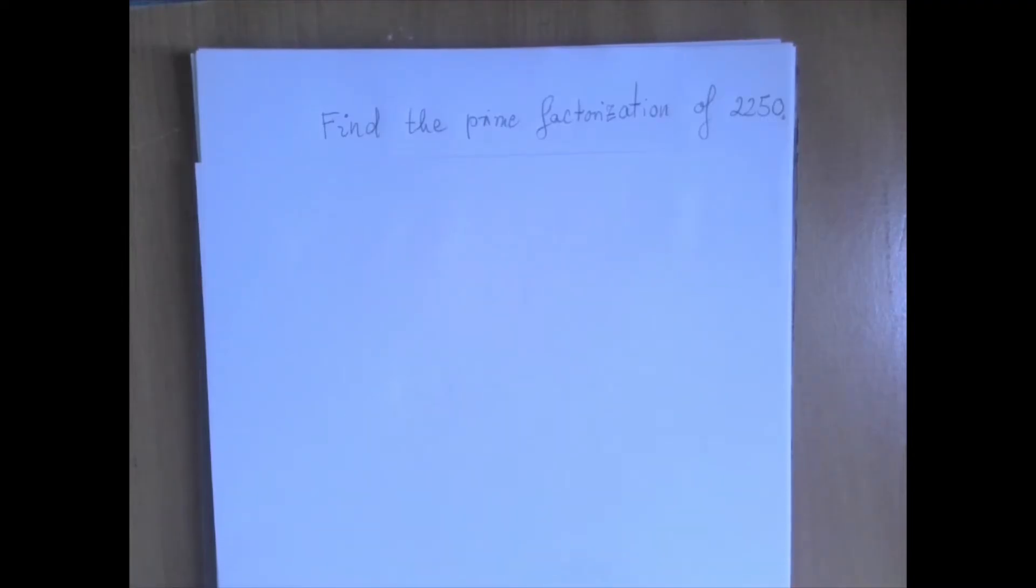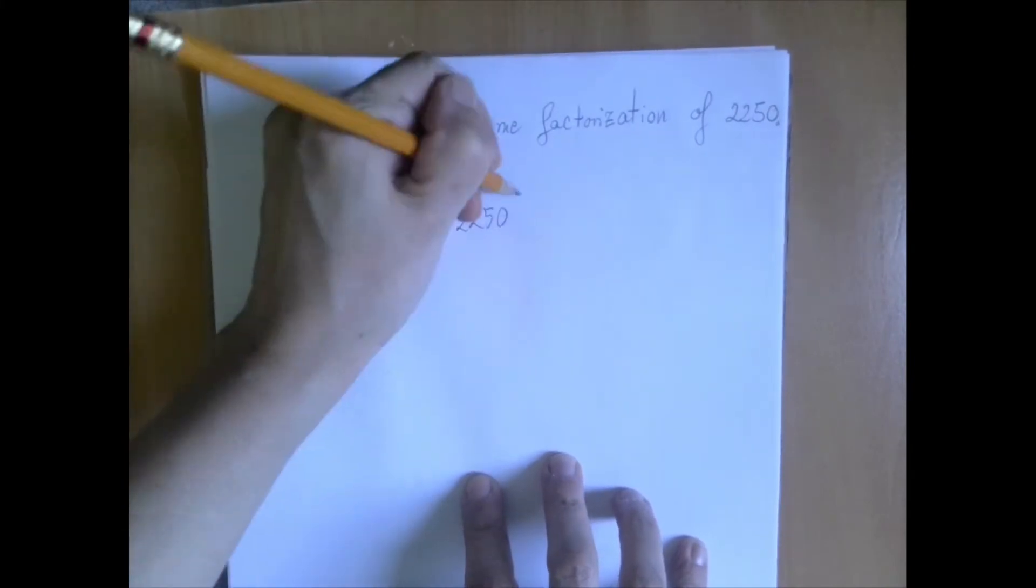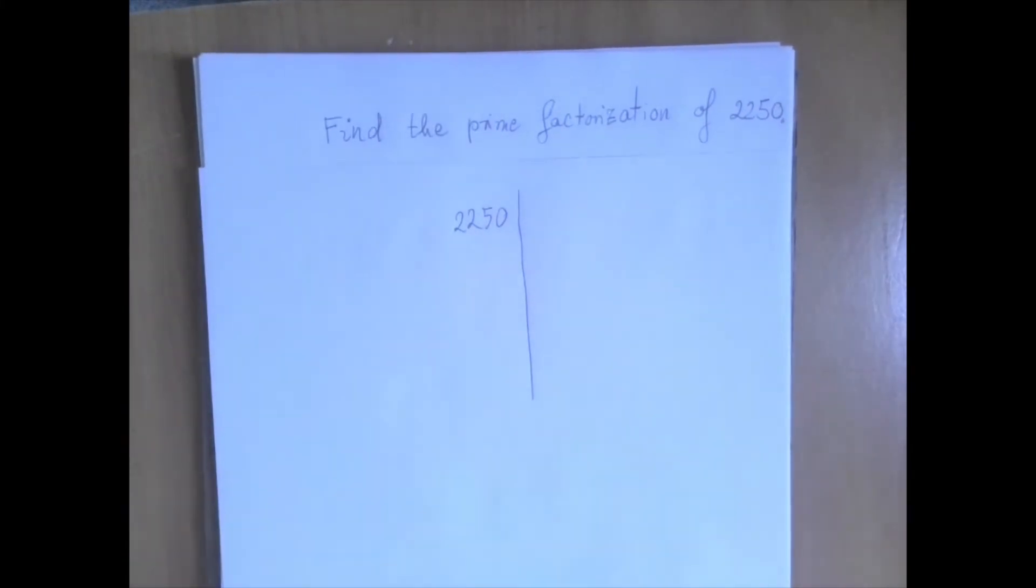I'm going to show you the most systematic method. There are other methods, but once the numbers become larger, I think this is the way to go. So we write down the number and we draw a line. We're going to start looking for prime factors, and let's go in order.